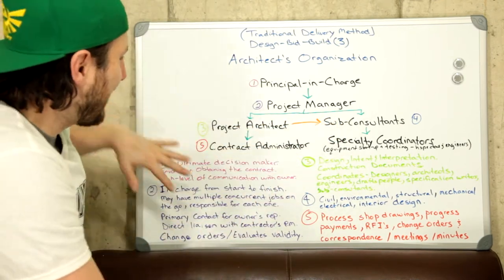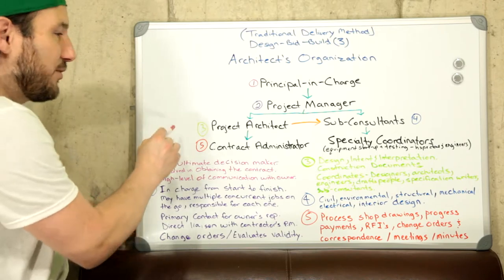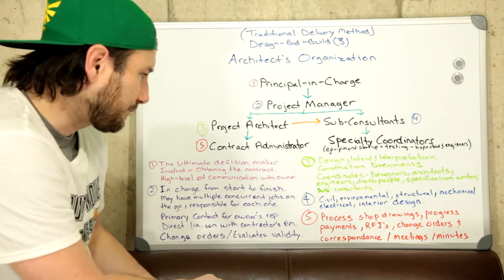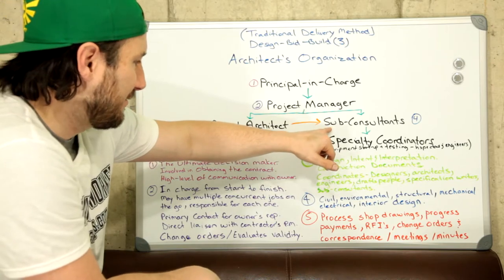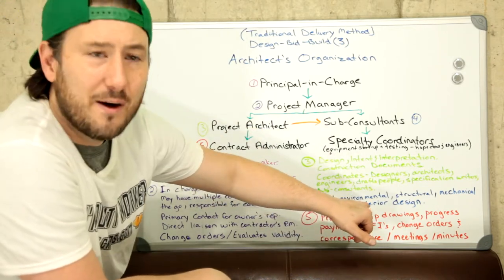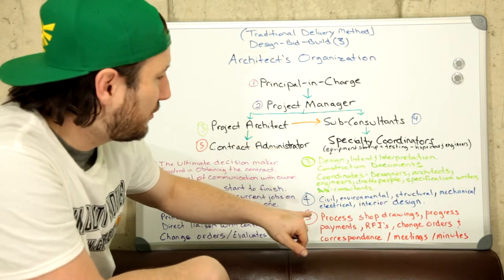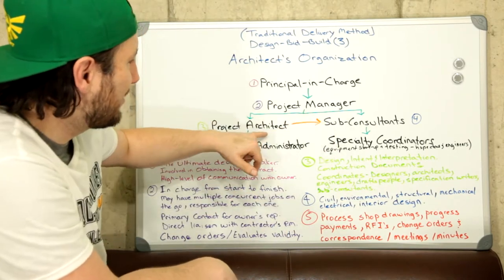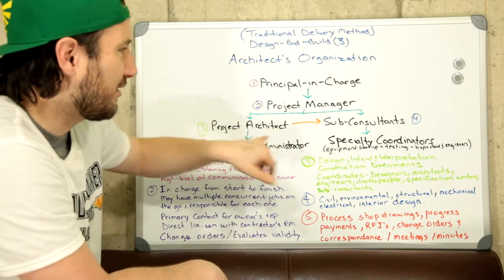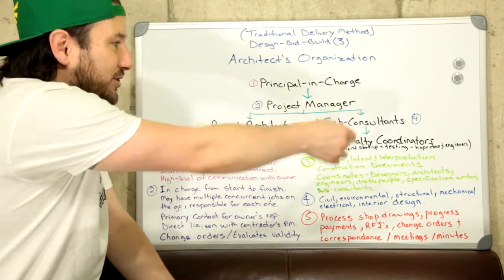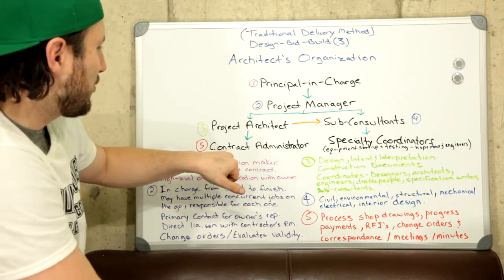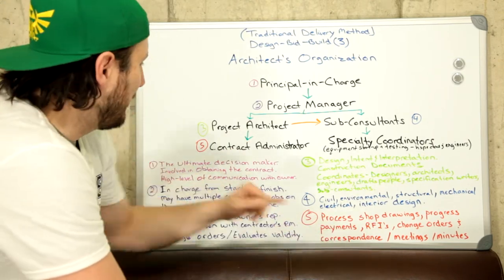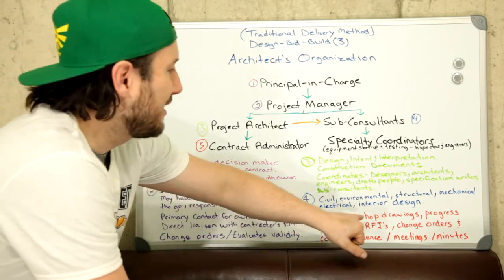The project architect also coordinates designers, architects, engineers, drafters, specification writers, and sub-consultants. There's a lot that goes into the contract and construction documents, with many people involved. The sub-consultants include civil, environmental, structural, mechanical, and electrical engineers, as well as interior designers — they are indirectly related to the project architect.